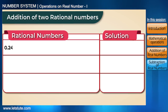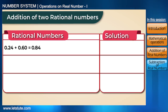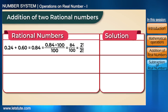Let's take an example: 0.24 plus 0.60 equals 0.84. We can write 0.84 in the form of p/q — that is, 84 divided by 100, which simplifies to 21 divided by 25.